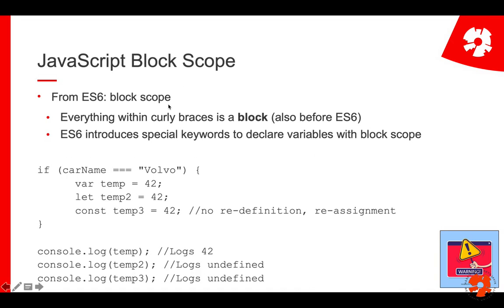ES6 introduced block scope. A block in JavaScript is everything with curly braces — a function, an if statement, a loop, and so on. ES6 introduced two keywords that allow you to declare variables with only block scope. If you use var, you can access the variable outside the if, but if you use let or const, suddenly you cannot — they are local within the if. The difference between let and const is simply that let defines a regular variable, whereas const defines a variable you cannot reassign — so it's like a constant.